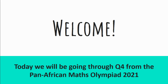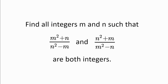Welcome! Today we'll be going through question 4 from the Pan-African Maths Olympiad 2021. Find all integers m and n such that (m² + n) / (n² - m) and (n² + m) / (m² - n) are both integers.